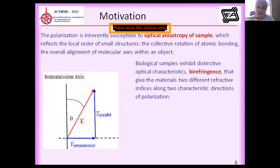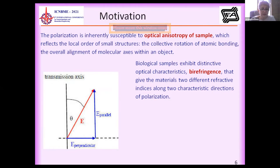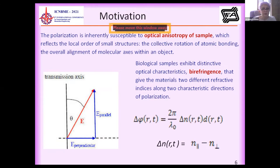One characteristic we can extract is anisotropy — the optical anisotropy of samples — which reflects the local order of structures. This may be the collective rotation of atomic bonding or the overall alignment of molecular axes within the object. The characteristic of this anisotropy is birefringence, which gives materials different refractive indices along two characteristic directions — parallel and perpendicular — which influence the light passing through the sample.